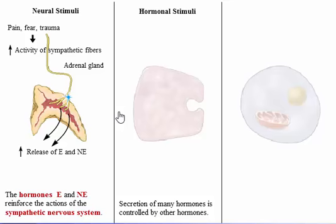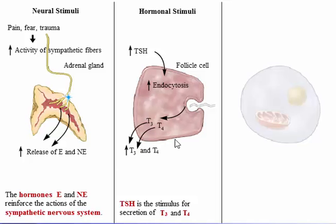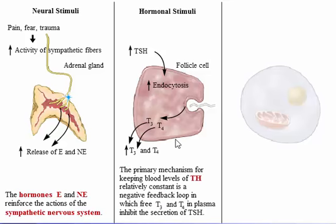We will study the secretion of thyroid hormone and cortisol in detail. Thyroid-stimulating hormone is the stimulus for secretion of T3 and T4. Increased amounts of thyroid-stimulating hormone act on follicle cells of the thyroid gland to cause more thyroglobulin to be brought into the cell, where it is cleaved to release T3 and T4, which diffuse into the bloodstream. The primary mechanism for keeping blood levels of thyroid hormone relatively constant is a negative feedback loop in which free T3 and T4 in plasma inhibit secretion of thyroid-stimulating hormone.